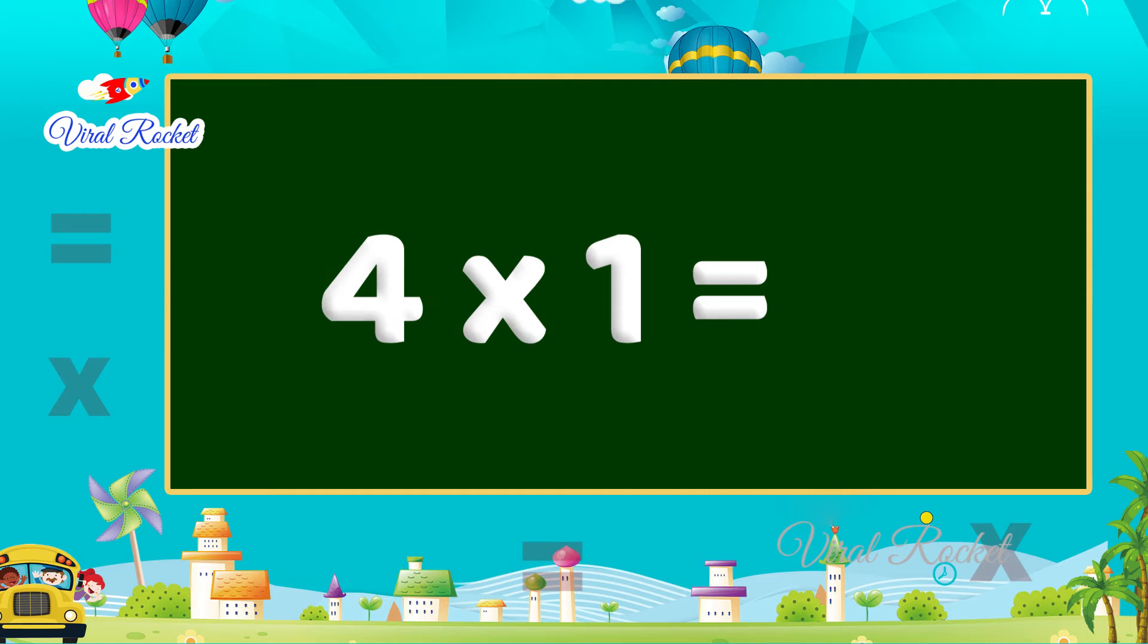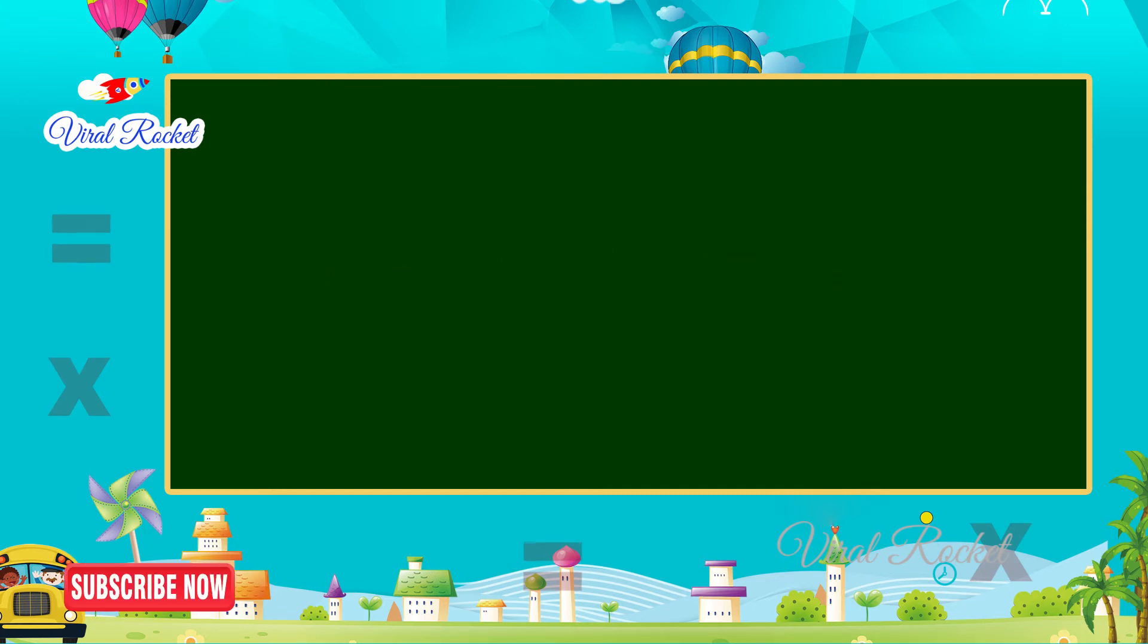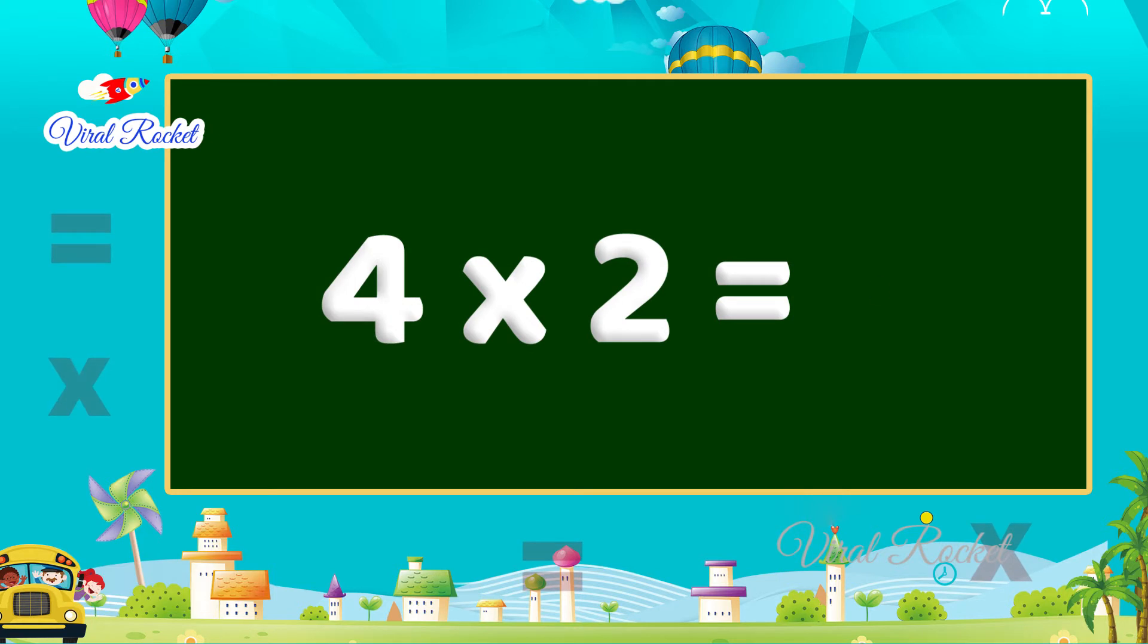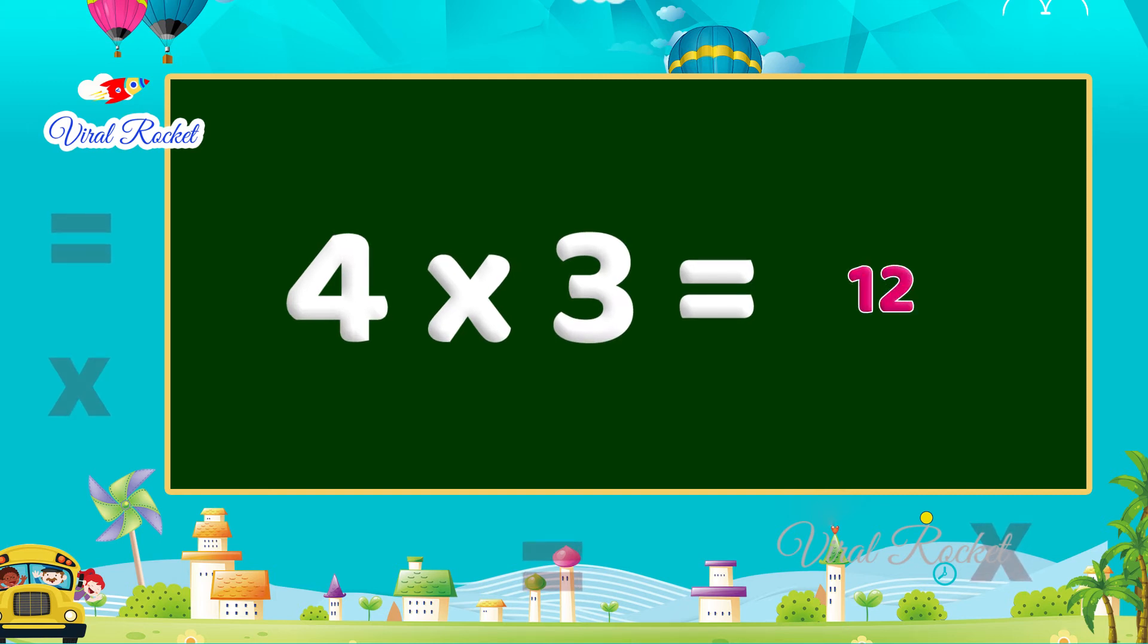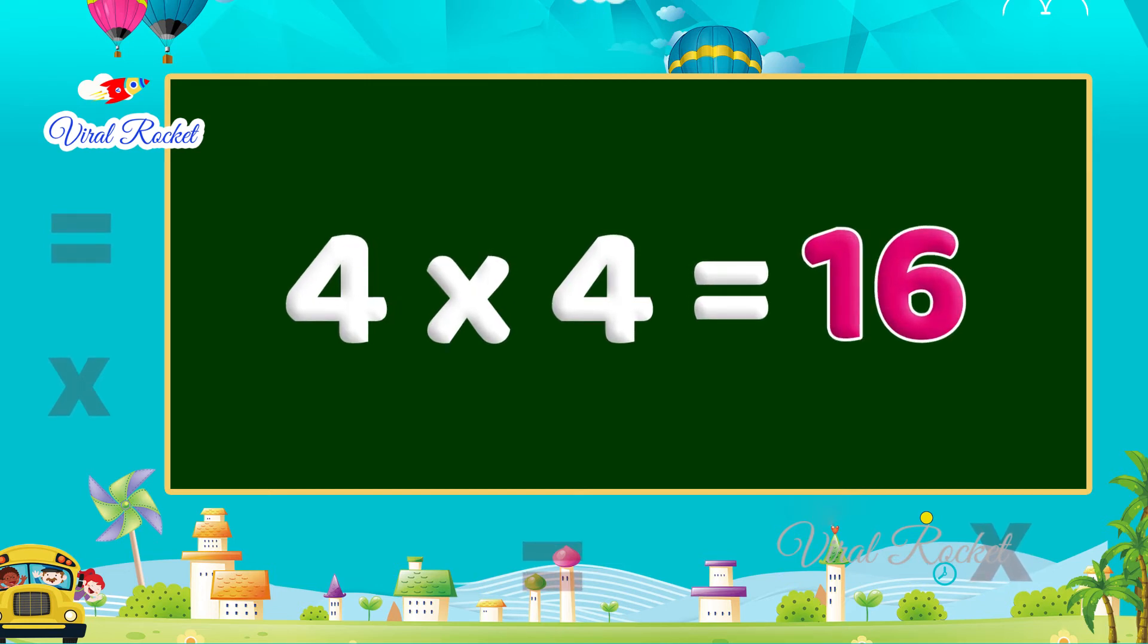Four ones are four, four twos are eight, four threes are twelve, four fours are sixteen.